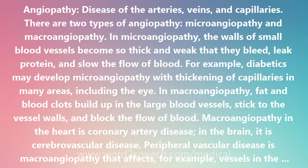In macroangiopathy, fat and blood clots build up in the large blood vessels, stick to the vessel walls, and block the flow of blood. Macroangiopathy in the heart is coronary artery disease; in the brain, it is cerebrovascular disease. Peripheral vascular disease is macroangiopathy that affects, for example, vessels in the legs.